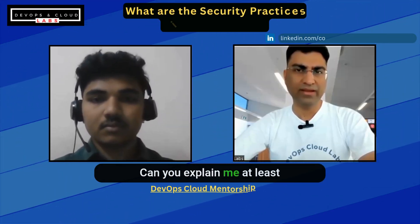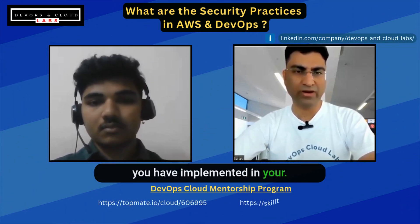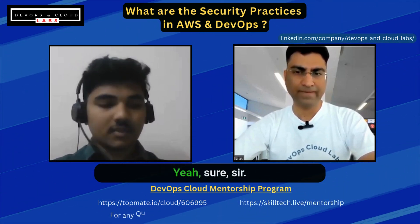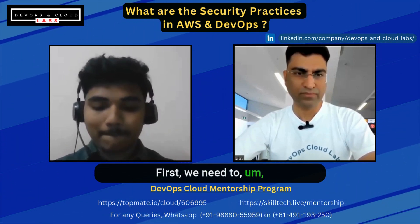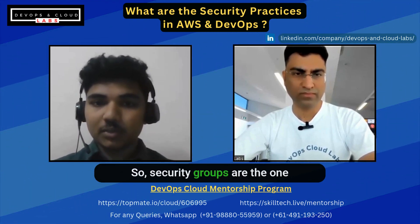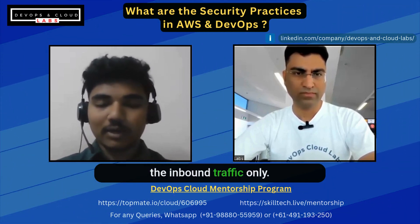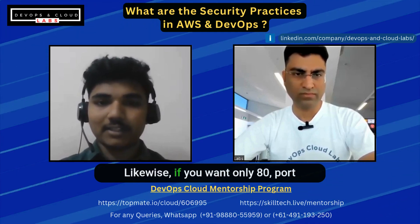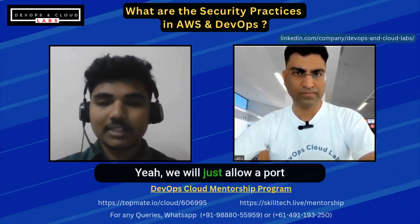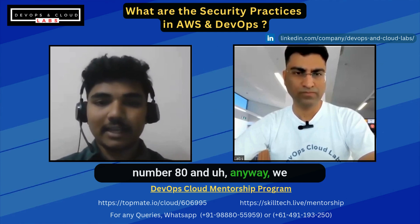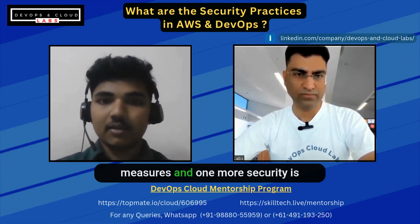Can you explain at least five security best practices you have implemented in your current project? Sure. For security to the instances, first we need to configure security groups. Security groups control the incoming and outgoing traffic. Mostly we control the inbound traffic only — we allow only the required traffic. For example, if you want only port 80, we allow port 80, and we also allow the SSH connection. This is one type of security measure.